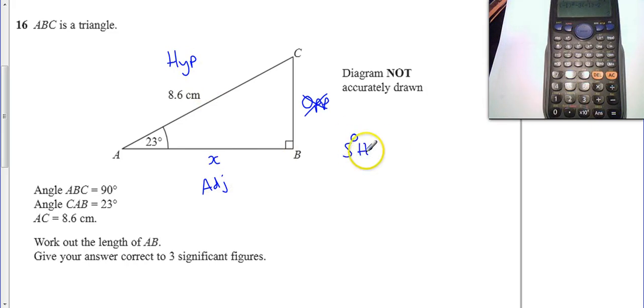So if I write out my SOH CAH TOA from memory, I can see the one that's got the A and the H in. This is the one I want. I don't want the sine or the tangent.